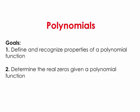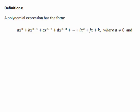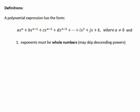Let's look at our first section in polynomials. In this section, we're going to define and recognize properties of a polynomial function and also determine the real zeros of that polynomial function. Before we get into it, let's look at our definition of what a polynomial is. Here's a polynomial expression in the form a·x^n + b·x^(n-1) + ..., where the a value is not equal to zero.